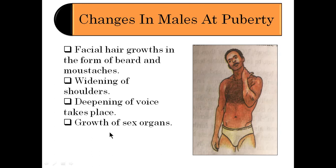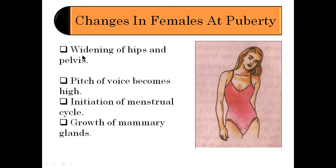In females, the changes at puberty include widening of hips and pelvis, the pitch of the voice becomes high, initiation of the menstrual cycle takes place, and the mammary glands start increasing in size.